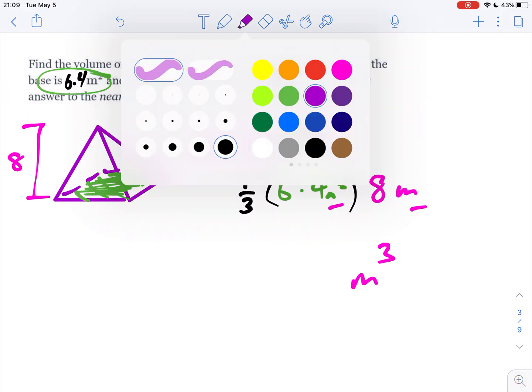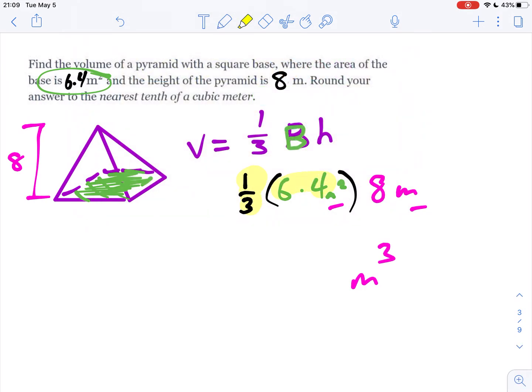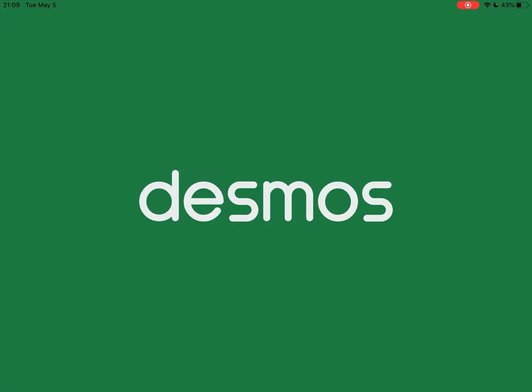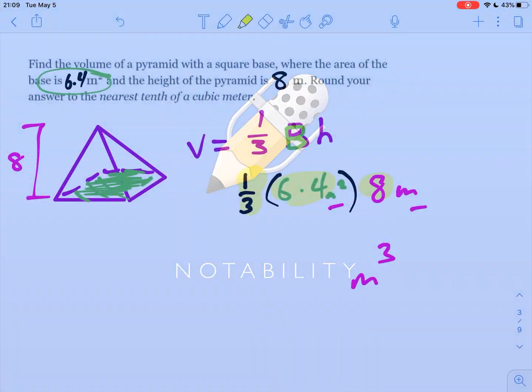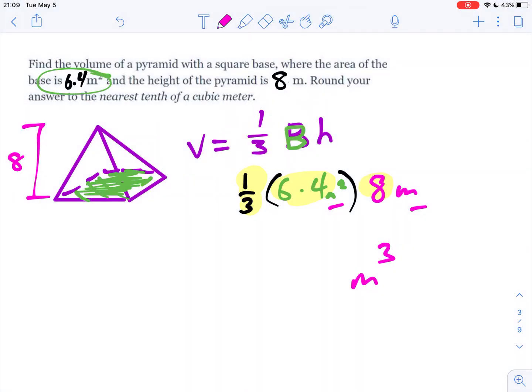All we're going to do is combine the numbers in a calculator. So we have one-third times 6.4 times 8. One-third times 6.4 times 8 gives us 17.1. So this will simplify into 17.1 cubic meters. Painless.